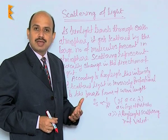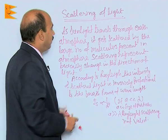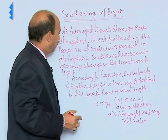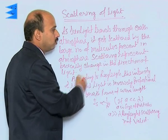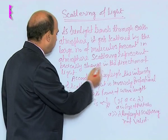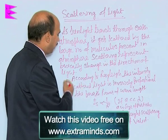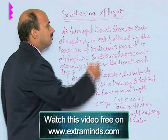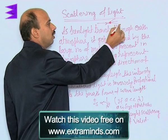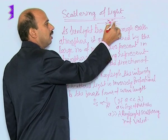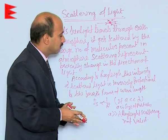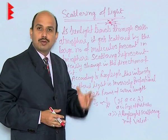What do we mean by scattering of light? As sunlight travels through the Earth's atmosphere, it gets scattered by the large number of molecules present in the atmosphere. Scattering represents basically a change in the direction of light. Suppose there is a molecule and light is coming towards it — the molecule scatters light in all directions when the light falls on it. This is scattering of light.